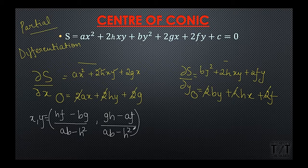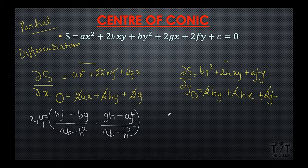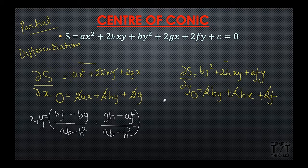Partial differentiation may be a little difficult. So what is the other step, or how can we remember this by another method? The other method is the discriminant method.